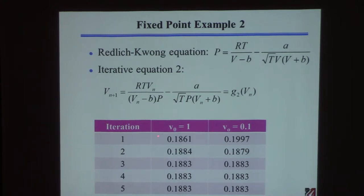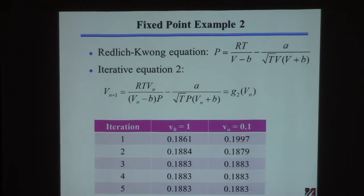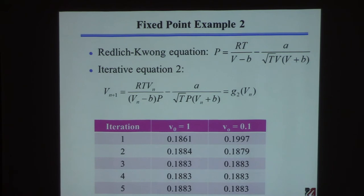I tried the same two initial guesses: 1 and 0.1. Guessing 1, it converges — basically by the second iteration you're already there. Guessing 0.1, it also converges to the same answer. I'd like to think that if you put a gas under a certain pressure, there's only one possible molar volume. I'm pretty happy there's only one solution, and that matches the book.